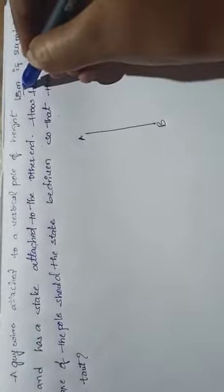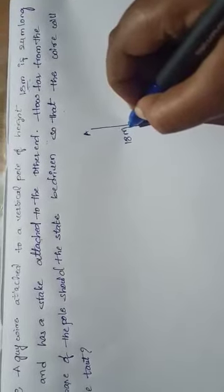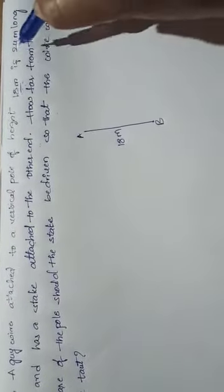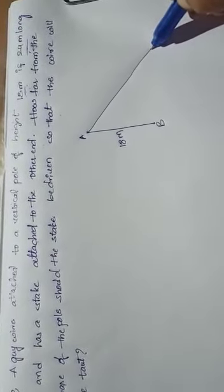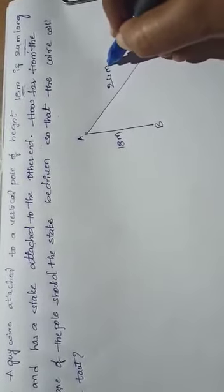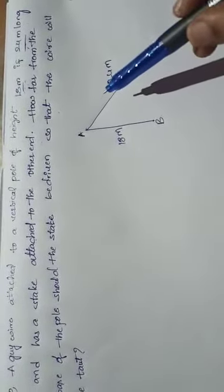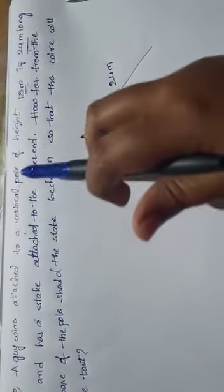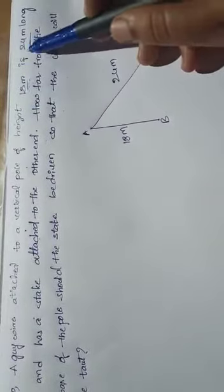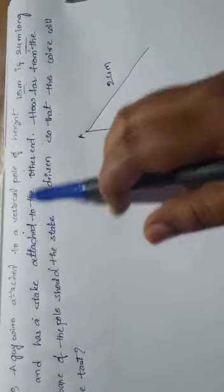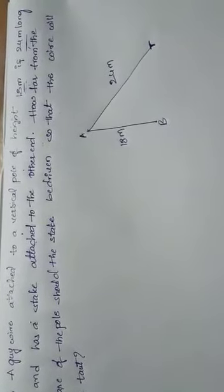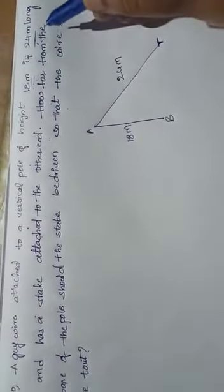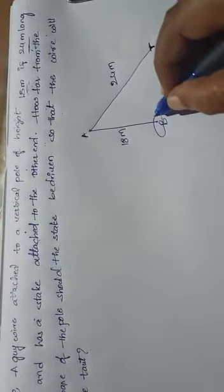Here given height of the vertical pole 18 meters and a guy wire is 20 meters long. This is the wire, length is 24 meters. A guy wire attached to a vertical pole, height of 18 meters and 20 meters long and has a stack attached to the other end. This is the stack attached to the other end for balancing the pole. Here we have to find how far from the base of the pole. Base of the pole is B.